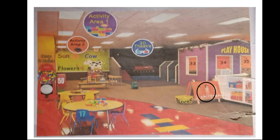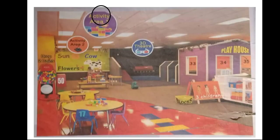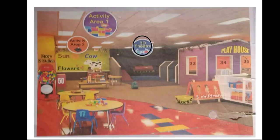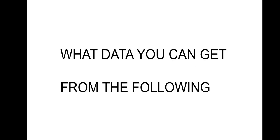Under alphanumeric: '3 children' has a number and alphabet, 'Activity Area 1', 'Activity Area 2', '3D Theater', and 'Drop 2 Coins.' Everything from the picture has been picked and written in the appropriate column.